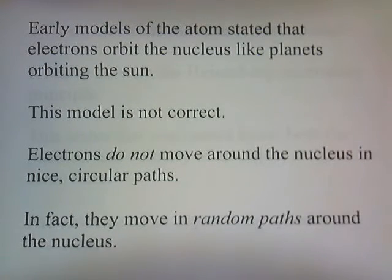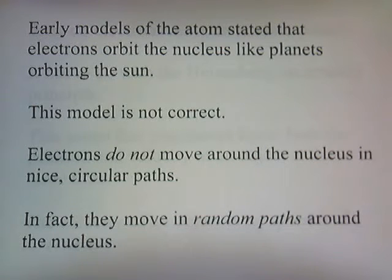Early models of the atom stated that electrons orbit the nucleus like planets orbiting the sun. This model is not correct. Electrons do not move around the nucleus in nice circular paths. In fact, they move in random paths around the nucleus.